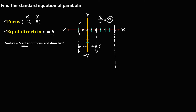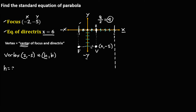To find the coordinate of the vertex: X is positive 2 and Y is negative 5. So the coordinate of the vertex is (2, −5). In parabola notation, the vertex is (H, K), so H is positive 2 and K is negative 5.